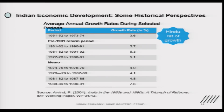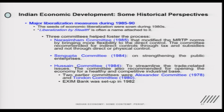Looking further, growth rates from 1974-75 to 1978-79 ranged between 4.1 and 4.9 percent, and in 1988-89 we achieved 7.6 percent — showing that when certain reforms were undertaken, they really helped. As mentioned, the seeds of liberalization were sown in the 1980s. Post-1985, when Indira Gandhi came to power, since left-leaning and socialist parties were powerful, liberalization measures were taken quietly — it is called 'liberalization by stealth' — silently done to attract more investment, more private sector participation, to improve productivity, and to generate higher employment.